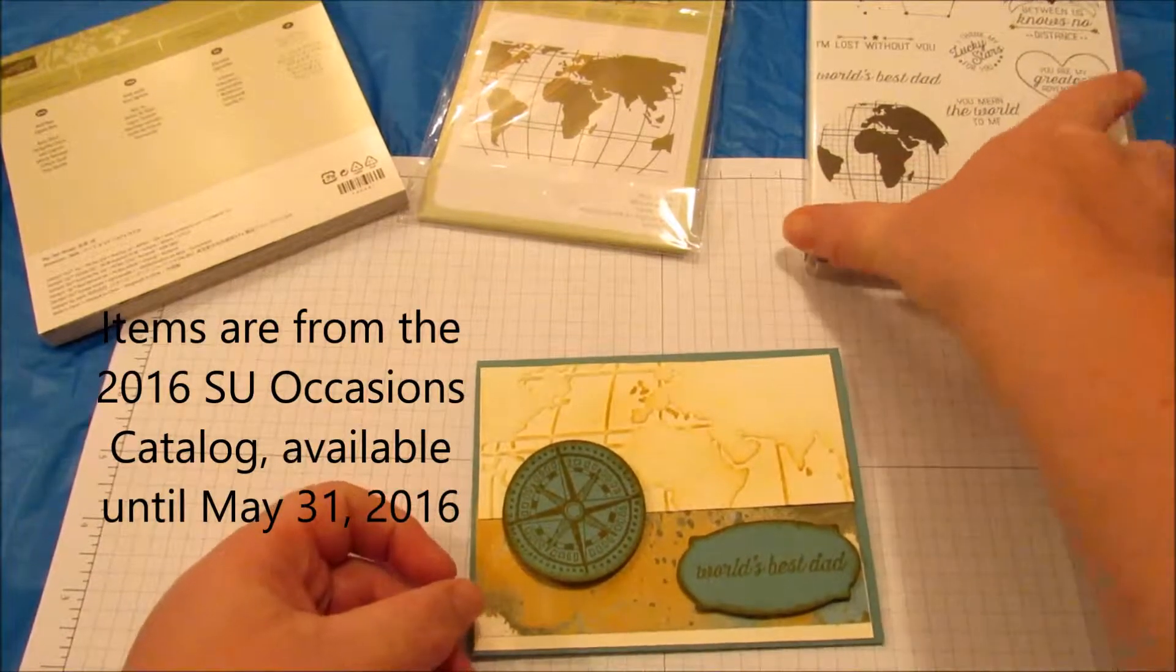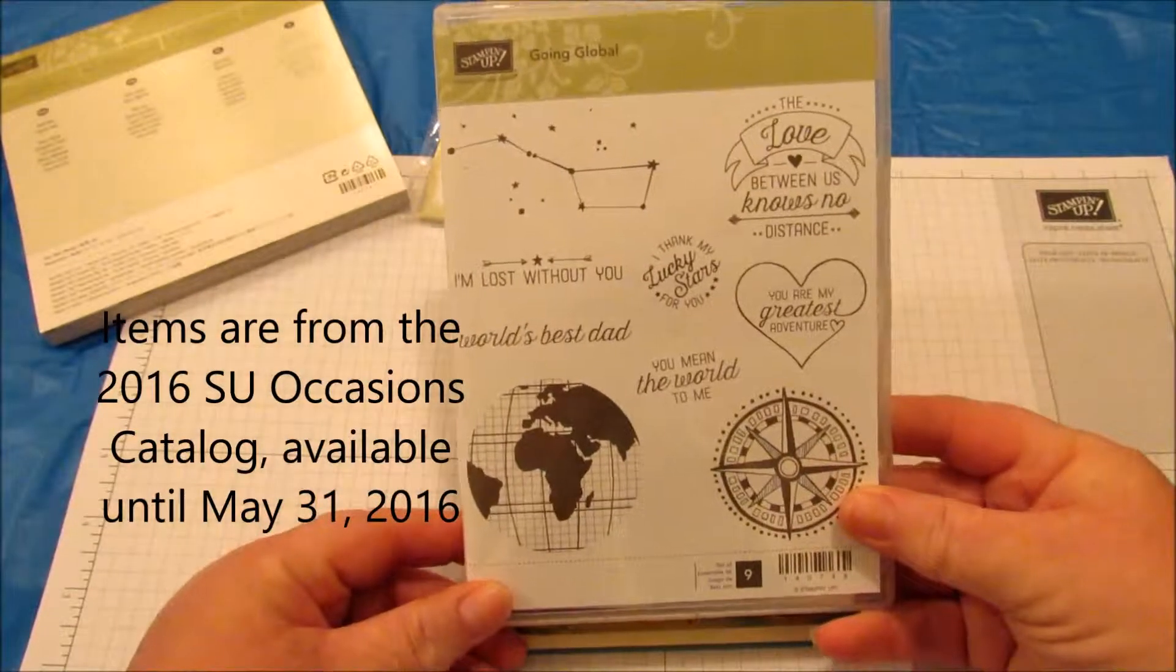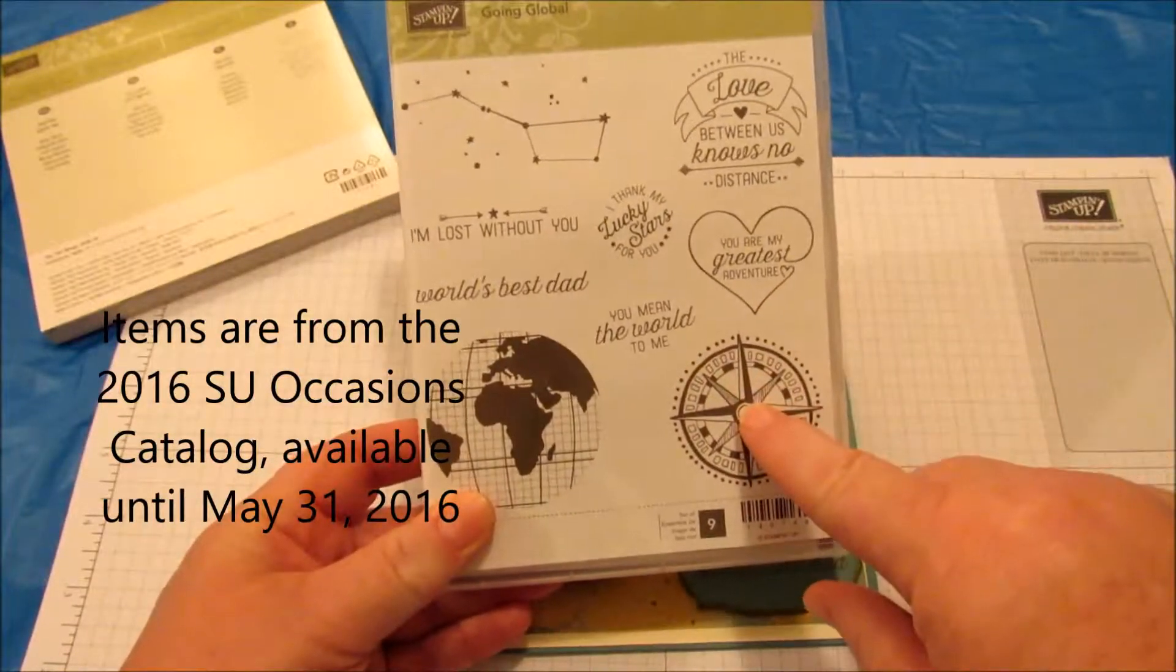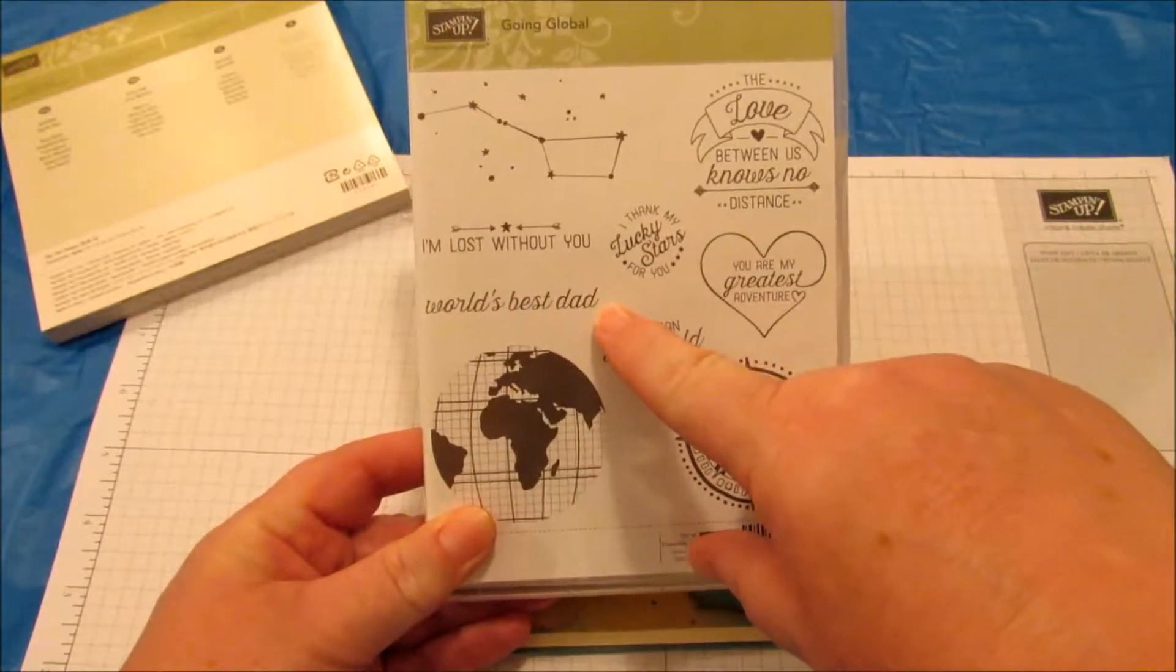The sets we're going to be using is Going Global. We're going to be using the compass looking stamp here and the World's Best Dad stamp.